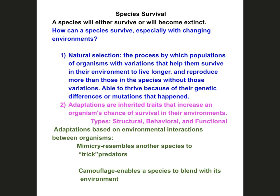Yesterday we talked about Darwin and how he came about his theory of evolution through natural selection. Today we're going to talk about how species actually survive instead of going extinct, especially when their environments are changing.